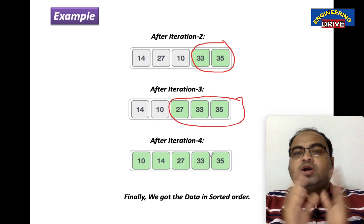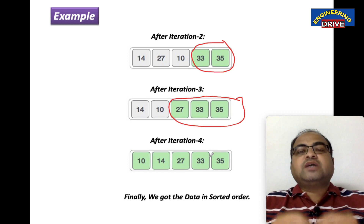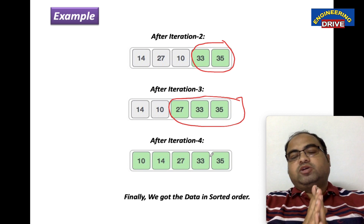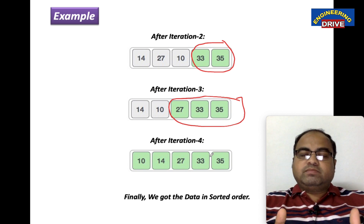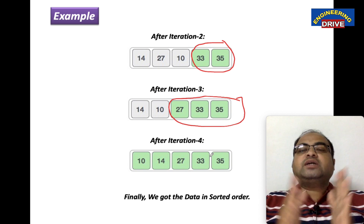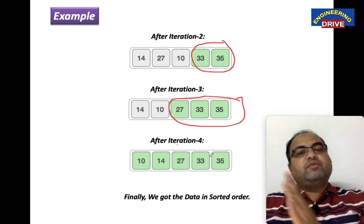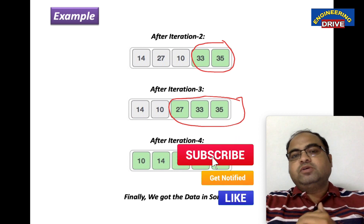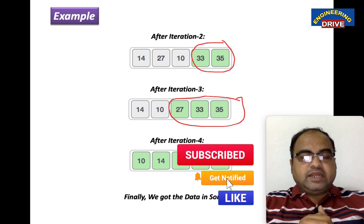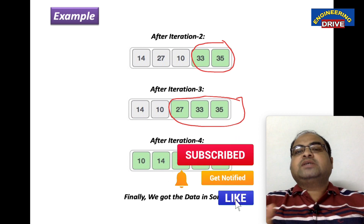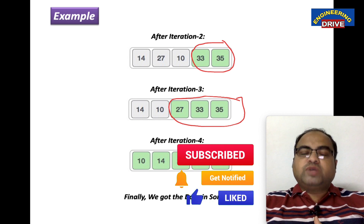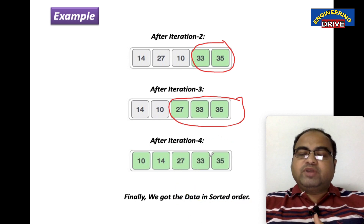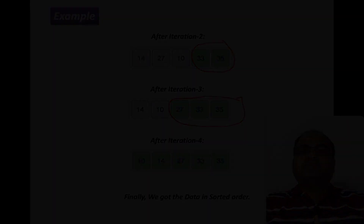We now have 5 numbers all in sorted order. In bubble sort, the largest number will come to the right side — this point you need to remember. With this, let me close today's session. See you soon everybody, take care.